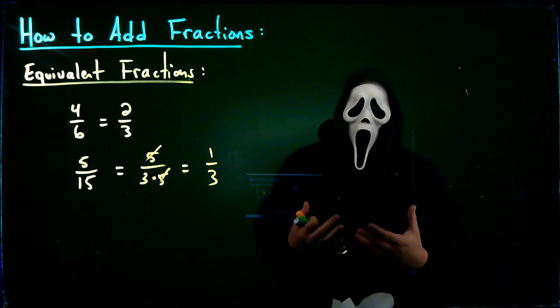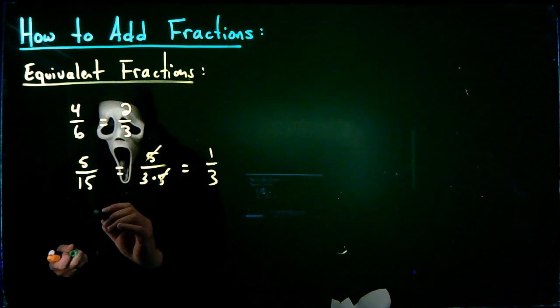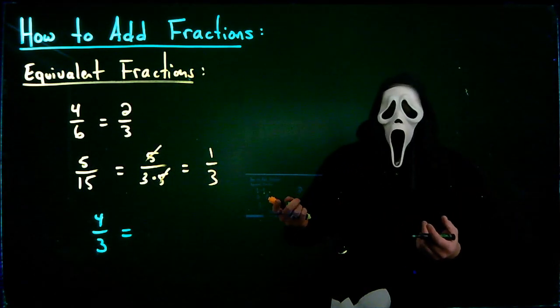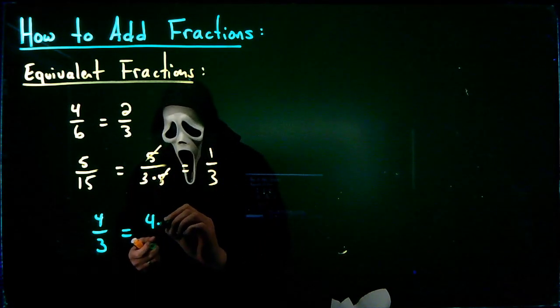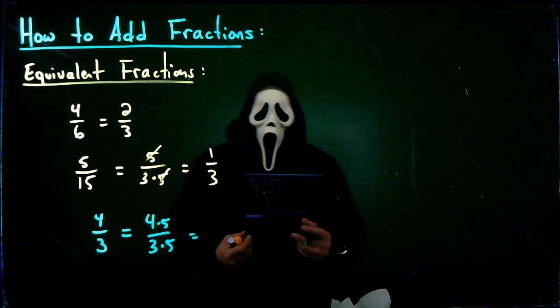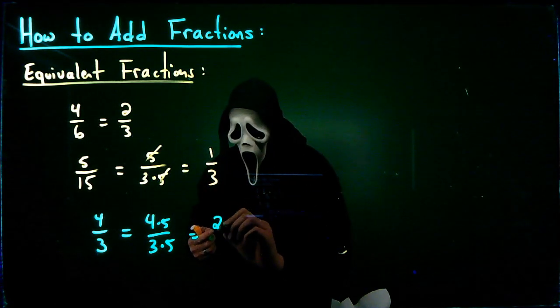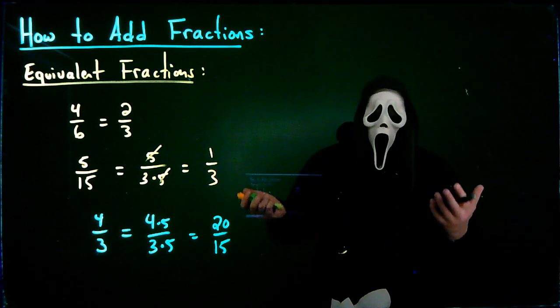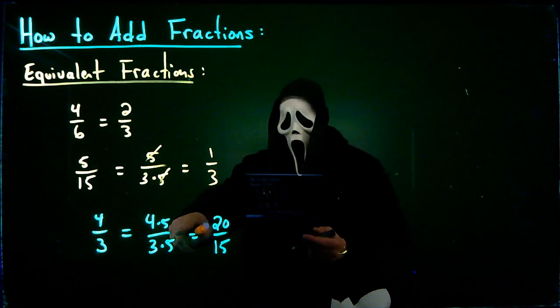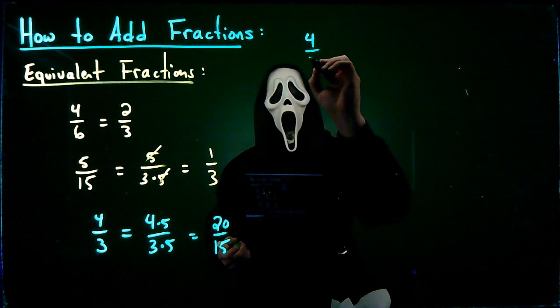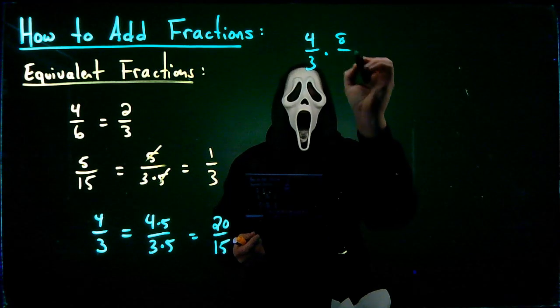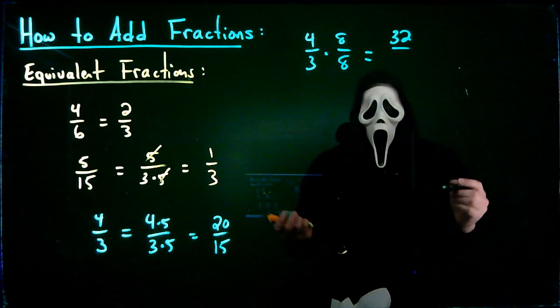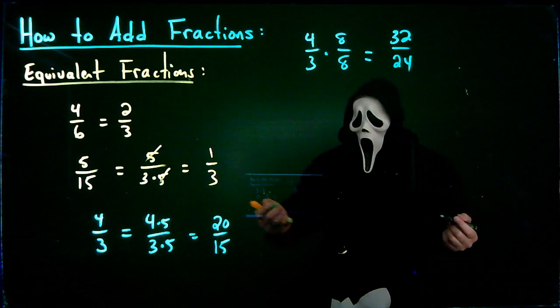What if I give you a fraction and I want to make something that's equivalent to it? Let's say I do 4 thirds. And let's say I want to come up with a fraction that's equivalent to it. What I'm going to do is I can multiply the top and the bottom by something. Let's say 4 times 5. And to keep the fraction balanced, I have to do the same to the bottom. So 3 times 5, giving me 20 over 15. So 4 thirds and 20 fifteenths are equivalent fractions. Now notice I can choose whatever I'd like to multiply the top and the bottom by. For example, I could say 4 thirds, and I could multiply the top by 8, and the bottom by 8. Well, 4 times 8 would be 32, and 3 times 8 would be 24. So we see yet another fraction that is equivalent to 4 thirds.